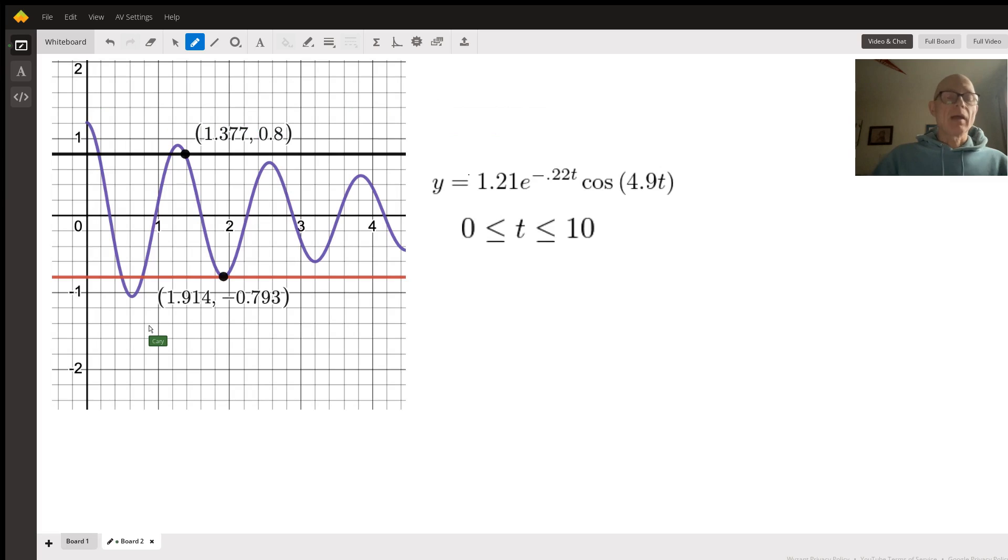So what we have here is an oscillating damped graph. Damped meaning that as time passes, the oscillations get smaller and smaller. The graph here is graphed over the interval zero to ten, although we only actually have zero to four shown in our visual here.